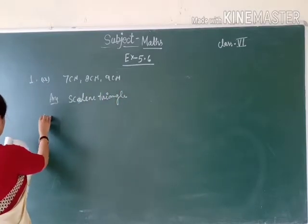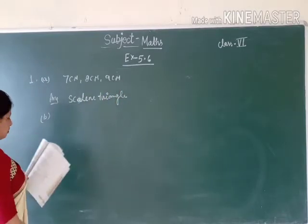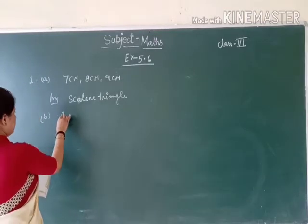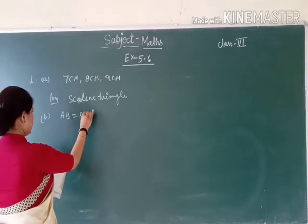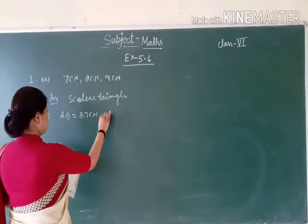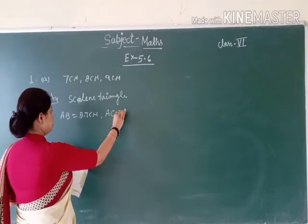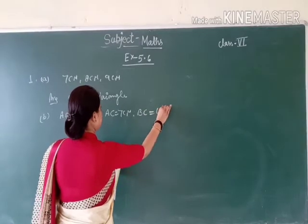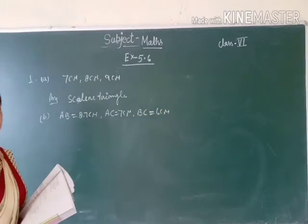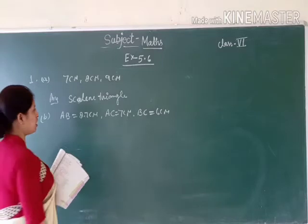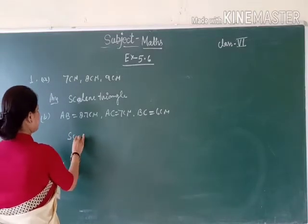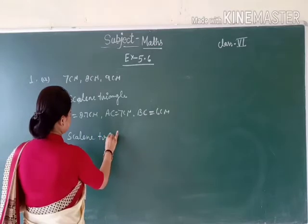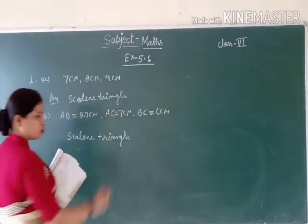Now next: triangle ABC where AB is equal to 8.7 cm, AC is equal to 7 cm, and BC is equal to 6 cm. All three sides are different, so this triangle is also a scalene triangle.